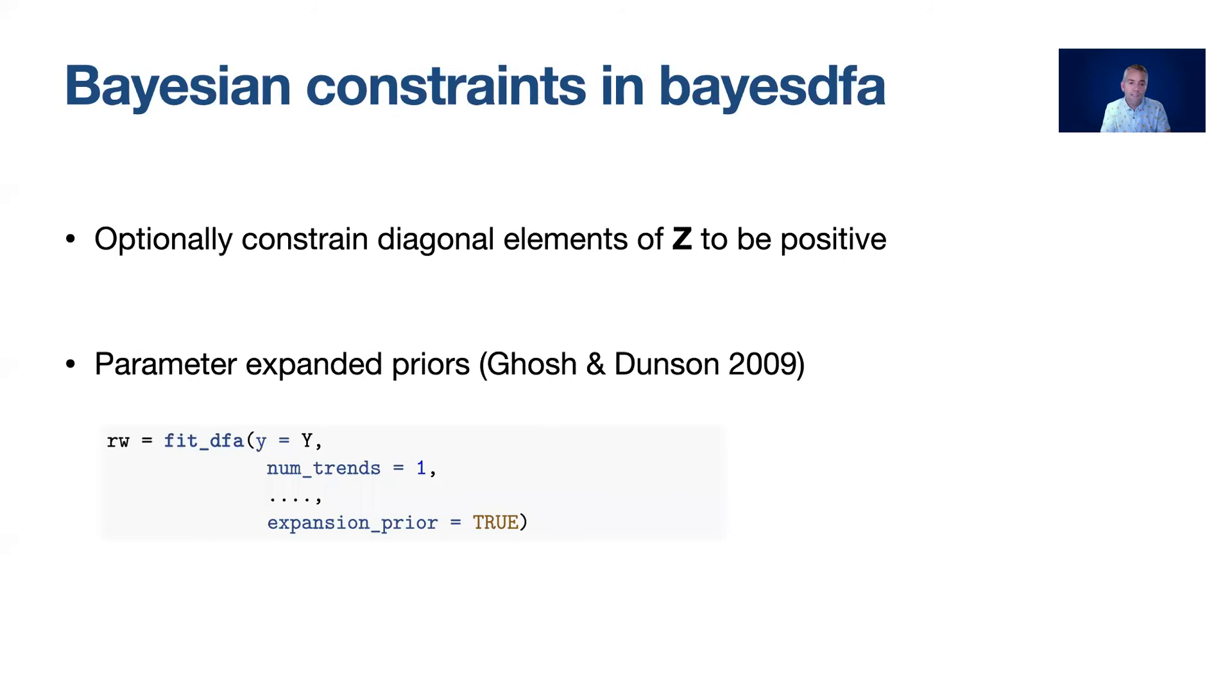But in addition in the Bayesian sense there's some priors and other constraints that we can think about. The first is that we can optionally constrain the diagonal elements of Z to be positive. The second is to develop the parameter expanded priors which has been proposed as another way to constrain the parameters. We can turn that expansion prior on and off with the expansion prior argument to the fit DFA function.